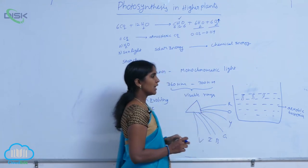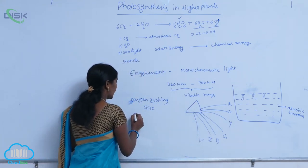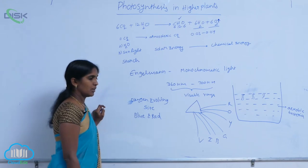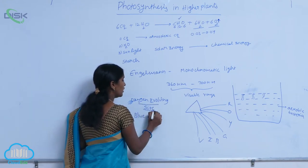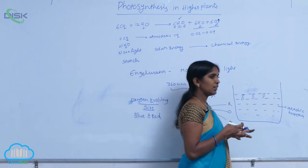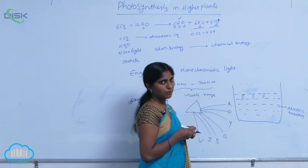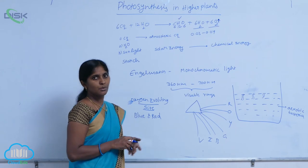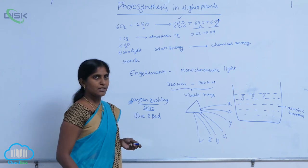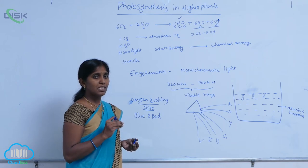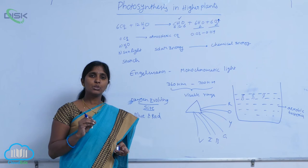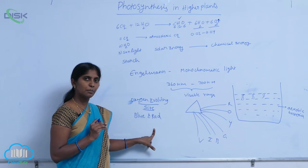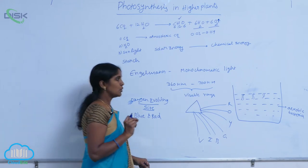He applied monochromatic lights and found that where blue light and red light are utilized, oxygen evolved more and bacteria accumulated more. The aerobic bacteria always need oxygen, which is why the concentration of aerobic bacteria is highest where red light or blue light are present.